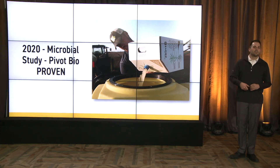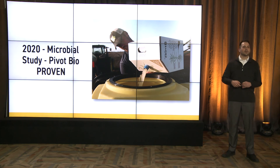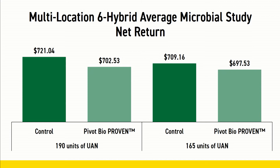Looking at Pivot Bio Proven, tested at 12.8 ounces per acre applied in-furrow at planting — found on page 116 of the 2020 PFR book at a cost of $20 per acre. In both nitrogen rates we did see a yield increase, but not enough to experience a positive ROI. The best yield increase was at the lower nitrogen rate.